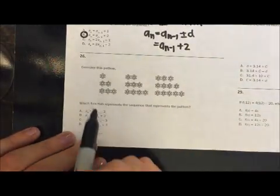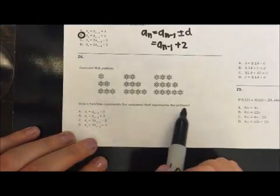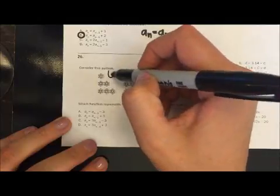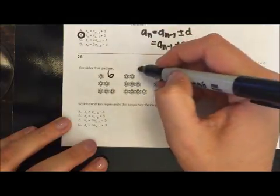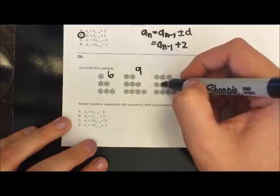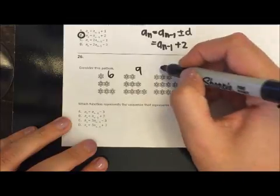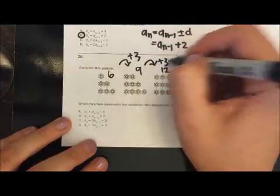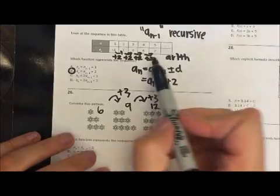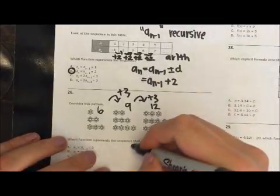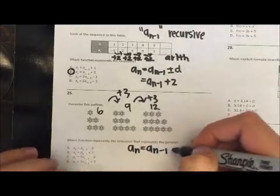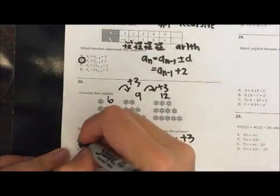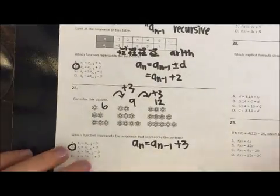26, let's look at this pattern. Which function represents the sequence that represents the pattern. So let's count our little snowflakes. 1, 2, 3, 4, 5, 6 in this one, 1, 2, 3, 4, 5, 6, 7, 8, 9 in this one, 1, 2, 3, 4, 5, 6, 7, 8, 9, 10, 11, 12 in this one. So it looks like every single time we are adding 3. So again, arithmetic, and using our arithmetic formula up here, it says look at the one beforehand and then add 3. Well, looking down at our options, B looks like, look at the one beforehand and add 3, what we've discovered.